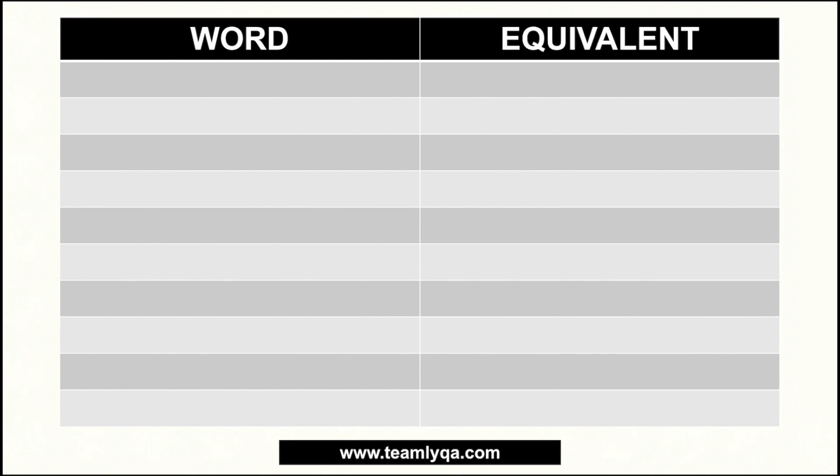Let's start off with something small. We have words like brace, pair, and couple, and the equivalent number is two. So when we talk about a brace, a pair, or a couple, it's two.